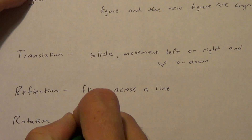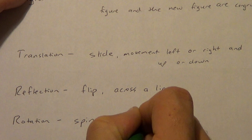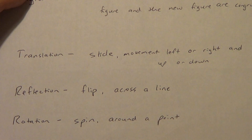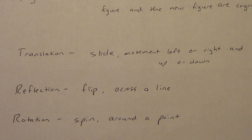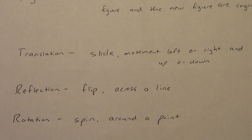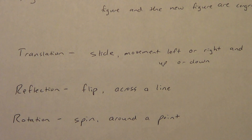Rotation — another word for that is a spin — and we do this around a point. We can do it around any point. In lesson 4.9 on the graphing plane, we'll usually do it around the origin, which is the point (0, 0). There are ways to reflect across a line or rotate around a point not on a graphing plane, but that requires a compass and gets more difficult.